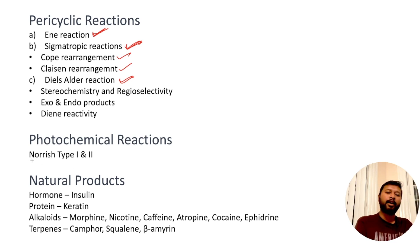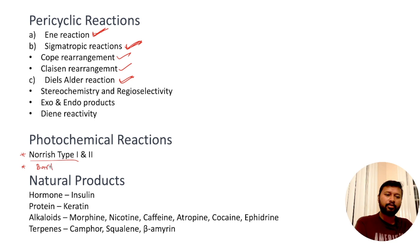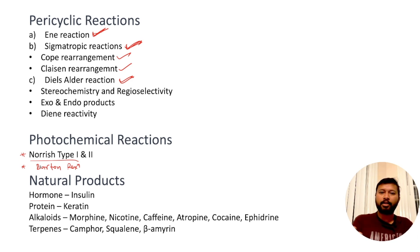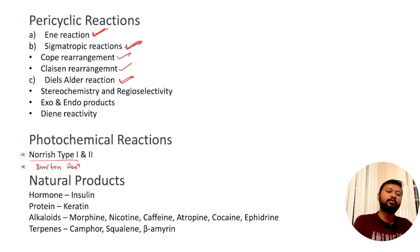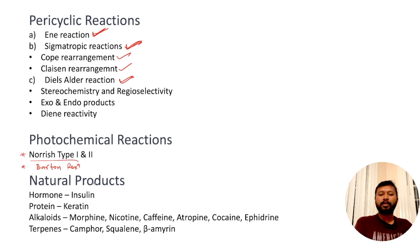Next are photochemical reactions. You should study Norrish type 1 and type 2 reactions — these have been asked multiple times. Also, Barton reaction is asked multiple times — it involves cleavage of the gamma or omega C–H bond. So Norrish type 1, type 2, and the Barton reaction are all important from photochemical reactions.